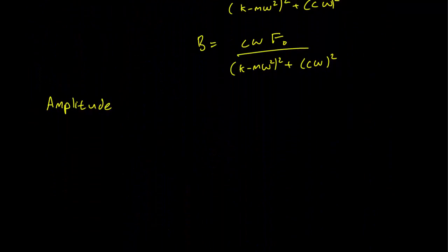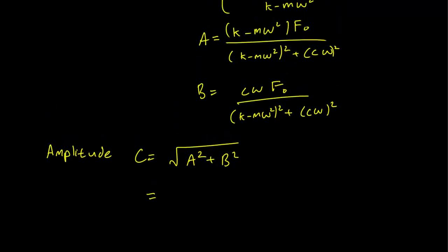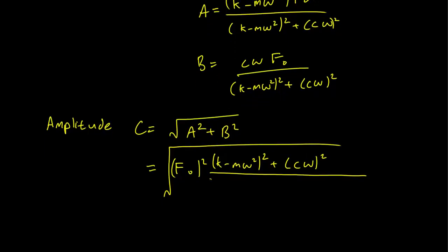So the amplitude, which we label C, is going to be square root of a squared plus b squared. And the algebra for plugging these guys in is going to be square root of factoring the f naught squared out. We simply get k minus m omega squared squared plus c omega squared over k minus m omega squared squared plus c omega squared and this thing squared.